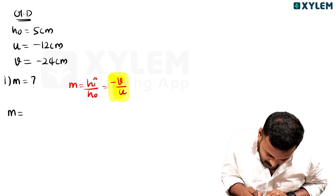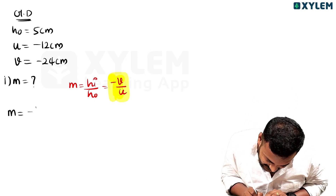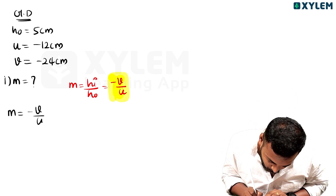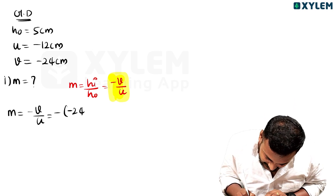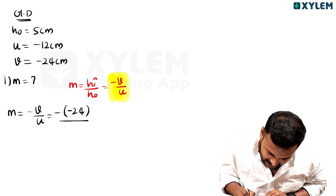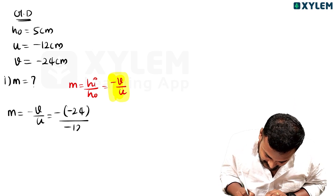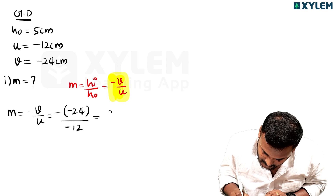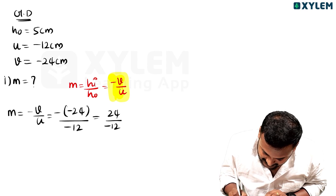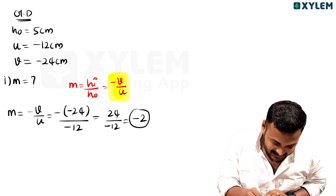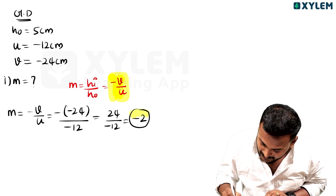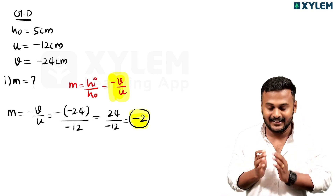So M is equal to minus V by U. V is 24, U is equal to minus 12. So 24 divided by minus 12 — M is equal to minus 2.